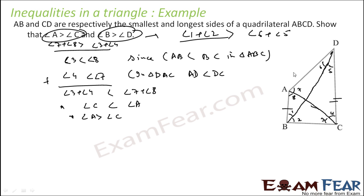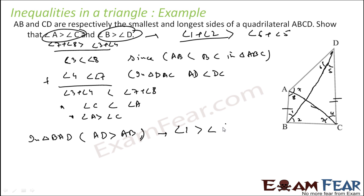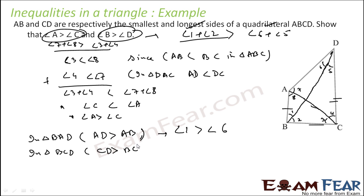We can see in triangle BCD that AD is greater than AB, because AB is the smallest. Since AD is greater than AB, the angle opposite to AD is angle 1, so angle 1 is greater than the corresponding angle. We have to find the relationship between angles 1 and 6 — that's done — and angles 2 and 5. CD is greater than BC because CD is the greatest side in this whole quadrilateral.